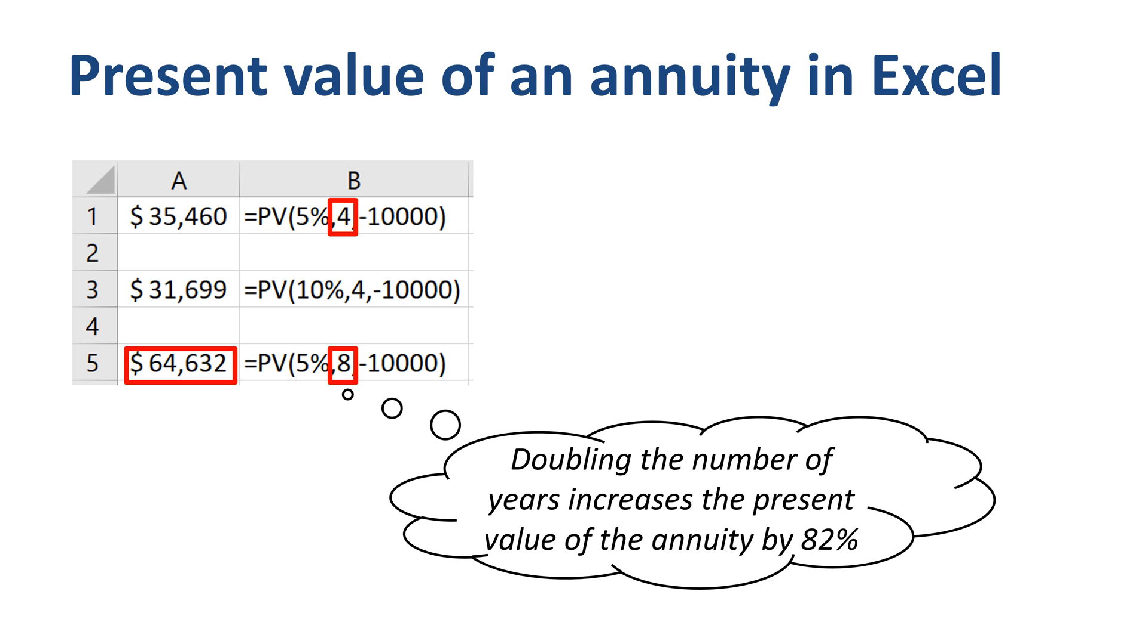Why is that? Wouldn't the doubling of the number of periods lead to a doubling of the present value of the annuity? Well, the additional four periods are added at the end of the payment schedule, and have a good amount of time to benefit from the compounding effect of interest. The present value of the payments 5-8 is significantly smaller than that of payments 1-4.